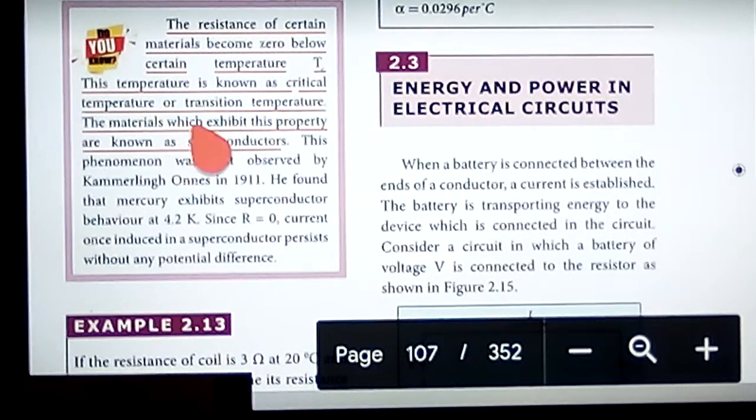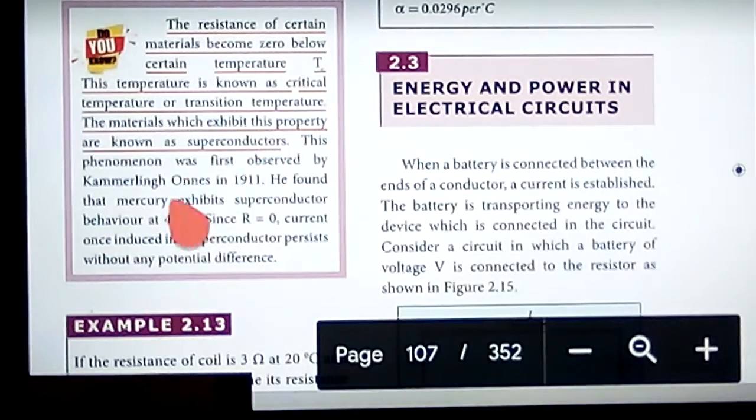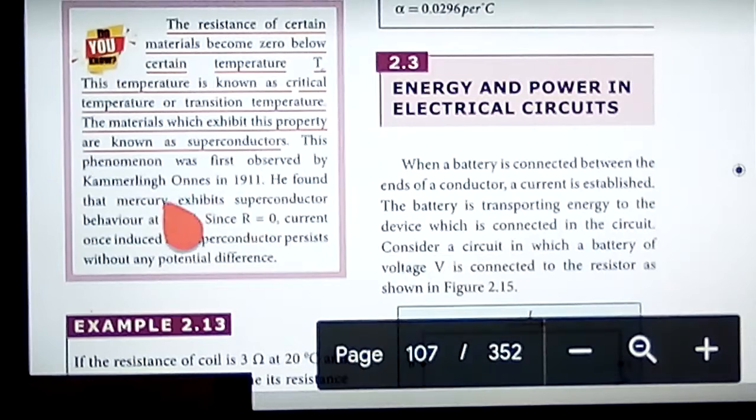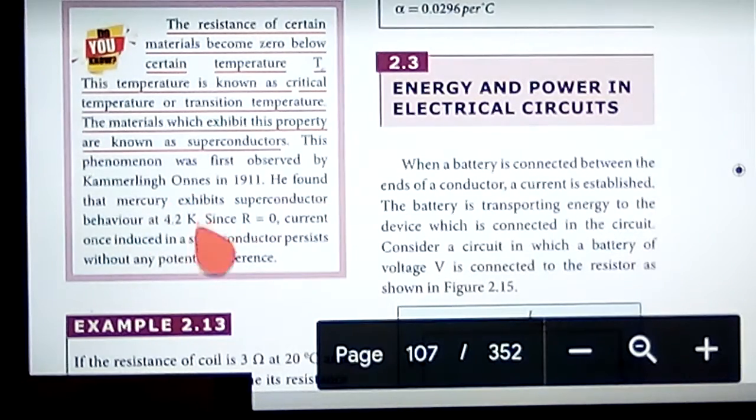The materials which exhibit this property are called superconductors. This phenomenon was first observed by Kamerlingh Onnes in 1911. He found that mercury exhibits superconductor behavior at a temperature of 4.2 Kelvin.